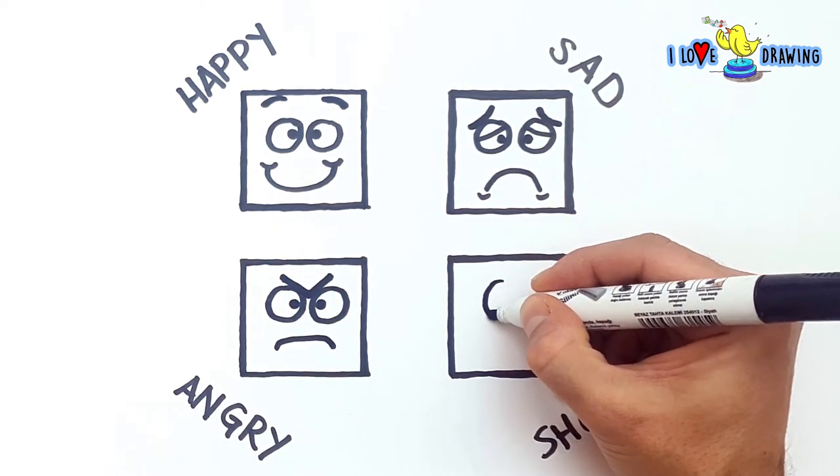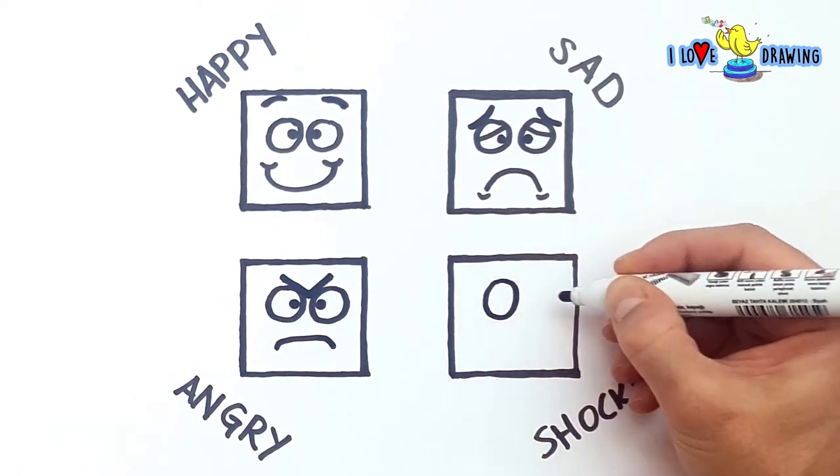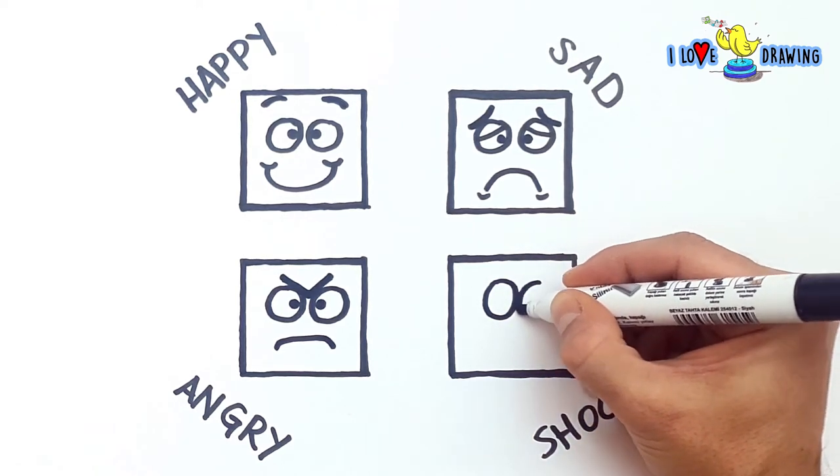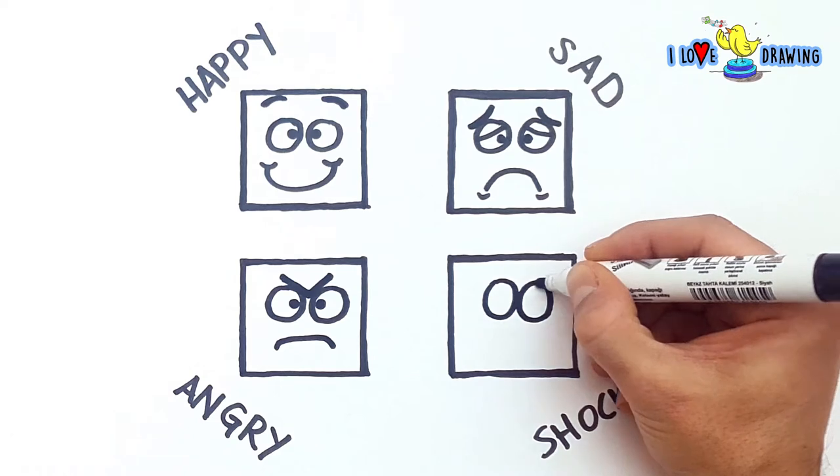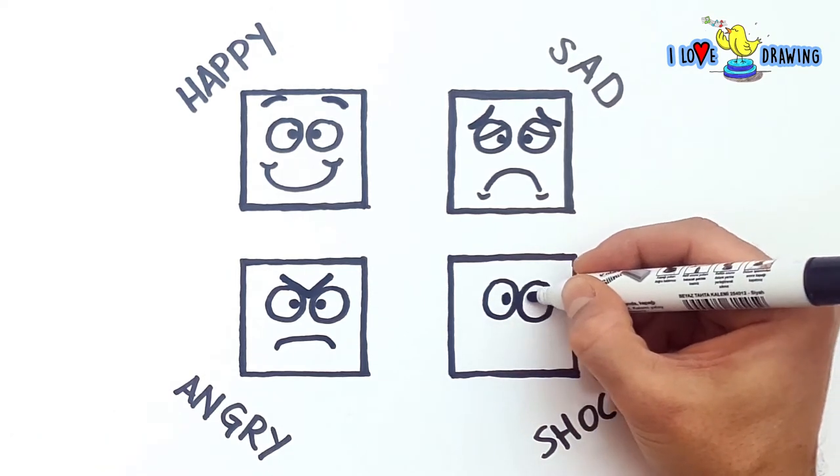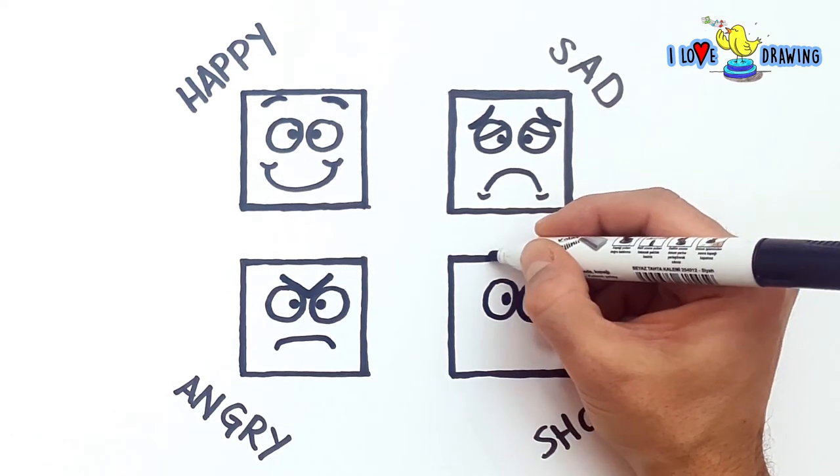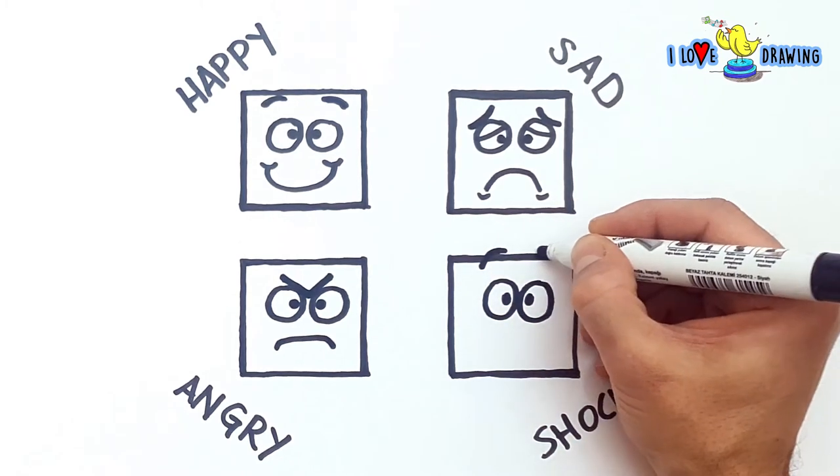When a character is shocked, its face looks stretched. Which means the eyes are going to be wide open. We place the eyebrows further above the eyes. Their angle will be pointing up and they'll be curved, same as the happy face.